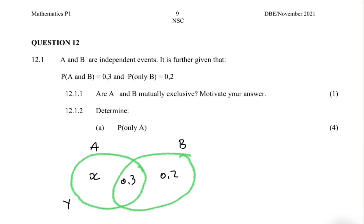The answer is no. The probability of A and B is not equal to zero; it is actually equal to 0.3. Now 12.1.2 asks us to determine the probability of only A.